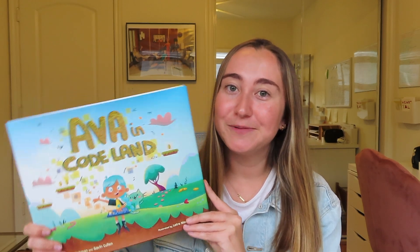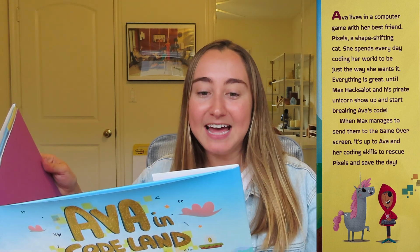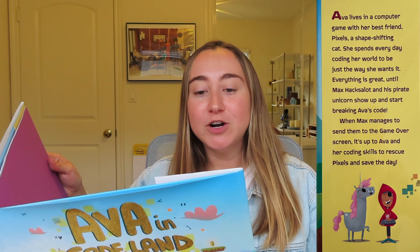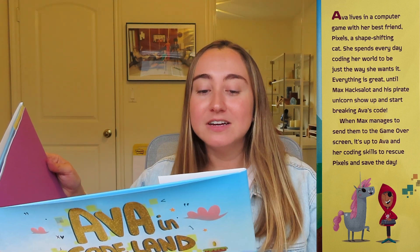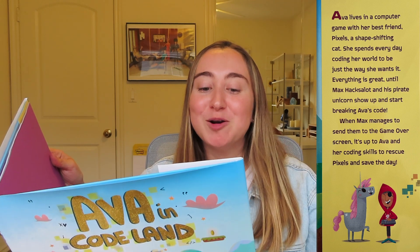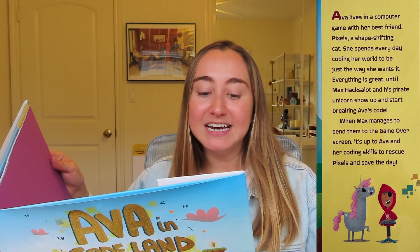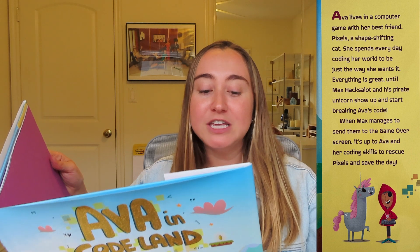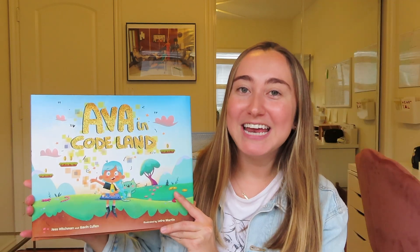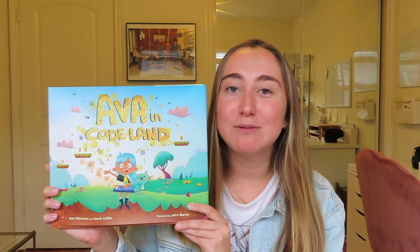Ava lives in a computer game with her best friend Pixels, a shape-shifting cat. She spends every day coding her world to be just the way she wants it. Everything is great until Max Haxelot and his pirate unicorn show up and start breaking Ava's code. When Max manages to send them to the game over screen, it's up to Ava and her coding skills to rescue Pixels and save the day. 'Ava in Codeland' is one of my favorite books to teach computer science to elementary students — I'll have it linked in the description below.